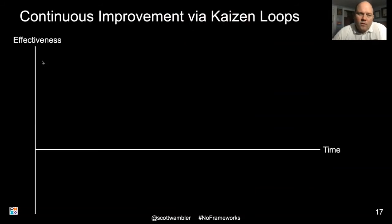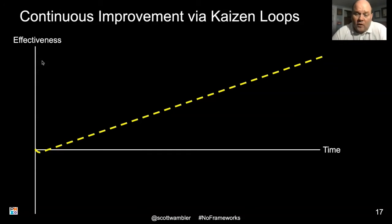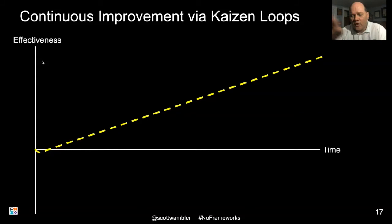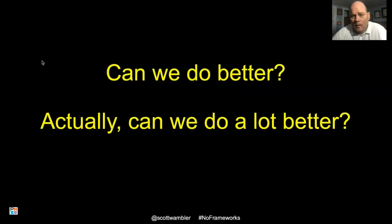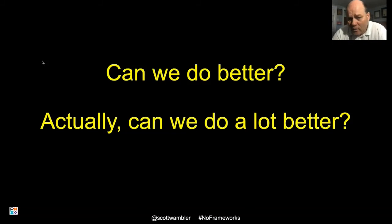When you take this approach, you get a process improvement curve where you just keep improving. To be fair, this line is really dashed — sometimes your experiments fail and effectiveness goes down a bit — but over time, your overall effectiveness on average improves and keeps on improving. This is what we're seeing in Amazon, Google, and many other organizations. They just keep getting better one small step at a time. The Amazons and eBays of the world are on the leading edge — they really do create new techniques and figure things out.